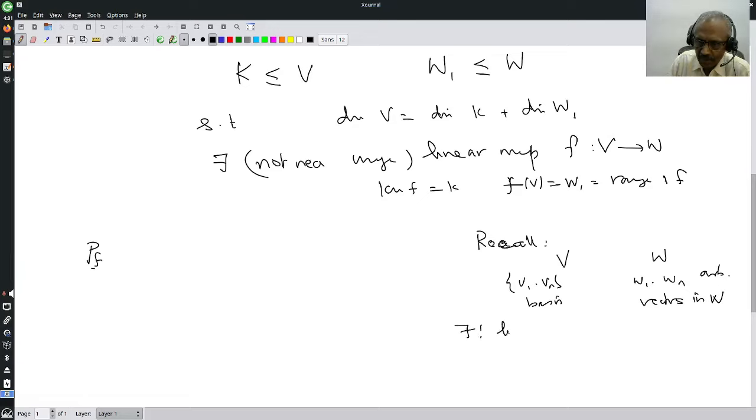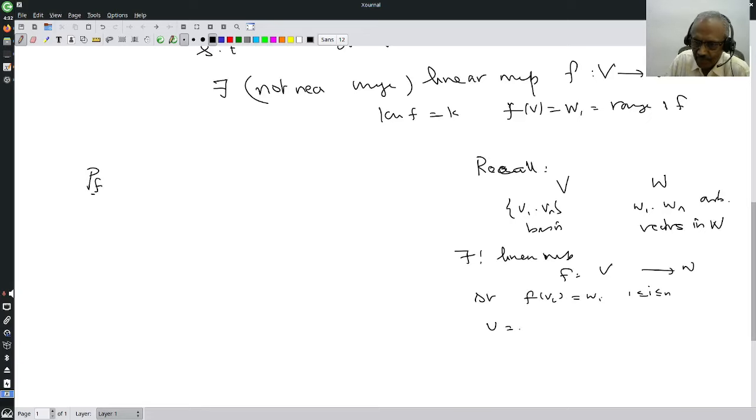...F from V to W, so that F of Vi is Wi for i equals 1 to n. Therefore, if I write V equals summation Ai Vi, then F of V is summation Ai F of Vi, which is summation Ai Wi.